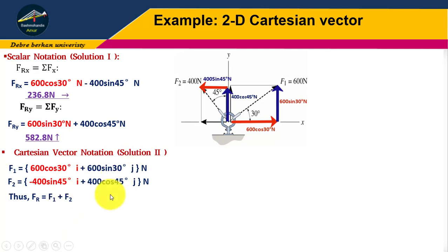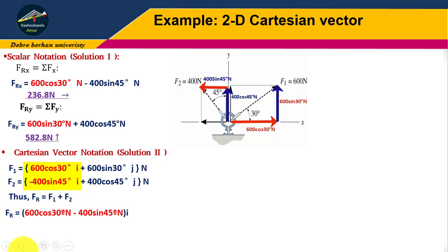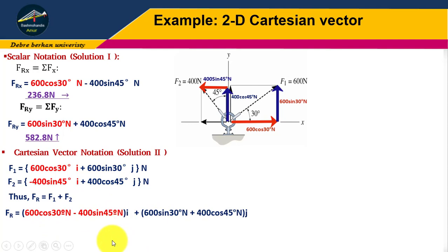The resultant equals F1 plus F2. Combining the i and j components, the resultant equals (600 cos 30 minus 400 sin 45) i plus (600 sin 30 plus 400 cos 45) j Newtons. Therefore, the resultant equals 236.8 i plus 582.8 j Newtons.